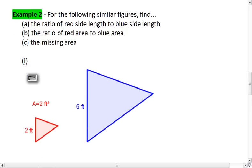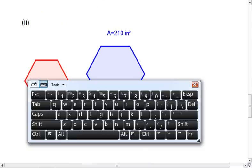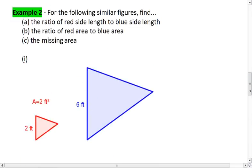These are the figures you have for the first one. We have a side of 2 to a side of 6, and the red figure has an area of 2 feet squared. For the second one, we have a side of 7 and a side of 9, and the blue has an area of 210 inches squared.